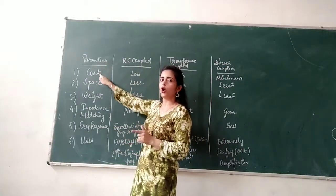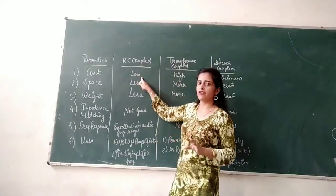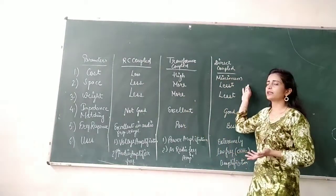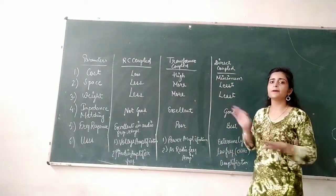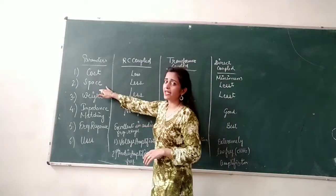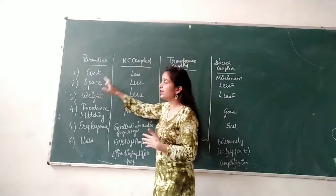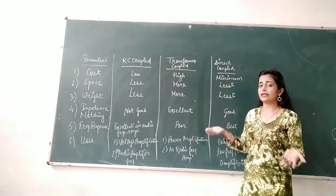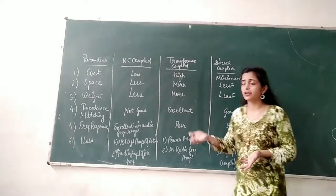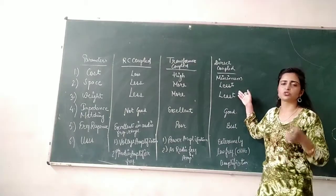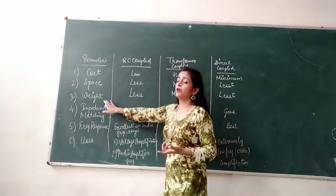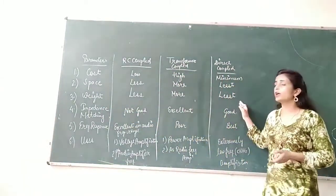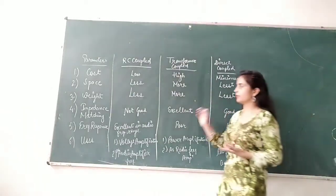First, regarding cost: the RC coupled amplifier has a low cost, the transformer coupled amplifier has a high cost, but the direct coupled amplifier has the minimum cost. Regarding space: the RC coupled amplifier takes very less space, the transformer coupled amplifier requires large space because of the transformers, but the direct coupled amplifier has the least space requirement because of its few components. Similarly for weight: it is less, very bulky with more weight, and least weight respectively.